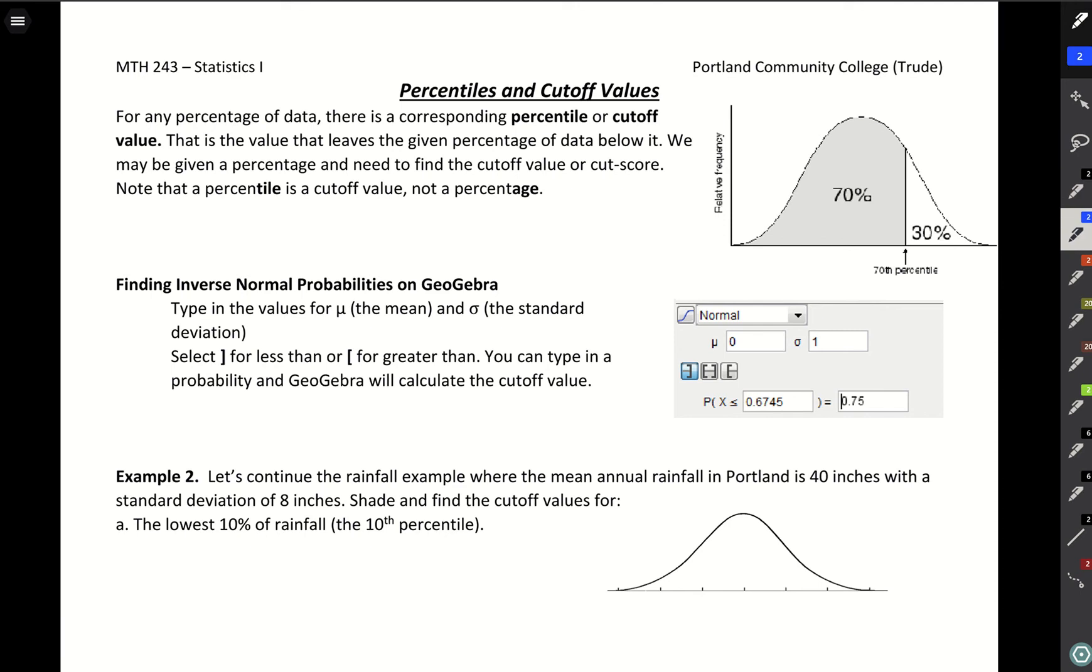So we looked at finding areas under the curve given cutoff values. Now what we want to do is switch that order and look at finding cutoff values. So basically finding values for X given area under the curve.